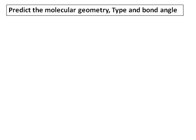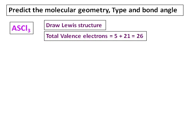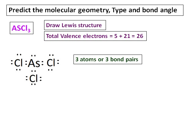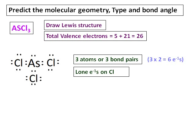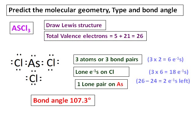One more example: predict the molecular geometry, type, and bond angle for AsCl3. As always, the first step is to draw the Lewis structure and count valence electrons. Arsenic belongs to group 5 and chlorine to group 7, so the total valence electrons are 26. Drawing the Lewis structure: three bond pairs use six electrons, and lone electrons on each Cl is 6 times 3, giving 18 electrons, for a total of 24. With two electrons remaining, arsenic gets one lone pair. Therefore, with three bond pairs and one lone pair, the bond angle will be lower than the tetrahedral bond angle.